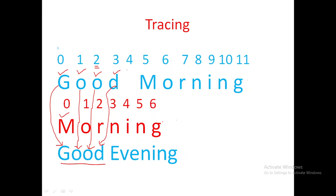Increment the main string index. Now we are at index location 4 where the space character is. Compare space with 'M' - again mismatch. Copy the space to the resultant string and increment the main string index, bringing us to location 5. Now compare this 'M' with the pattern's 'M'. Both characters are the same - for the first time we have a match. When 'M' and 'M' are the same, increment the index of both the main string and the pattern string.